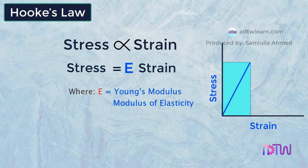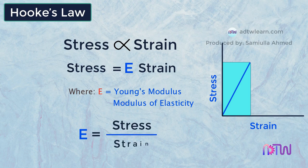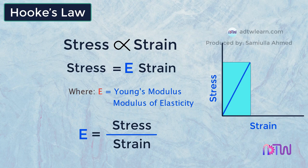This equation can be rearranged as E equals stress divided by strain. The value of E is different for different materials and is calculated as the ratio of stress applied on a body to the strain undergone by the body. The unit of Young's modulus is the same as stress — that is, newton per mm² or newton per m², depending on the unit used for calculating area.